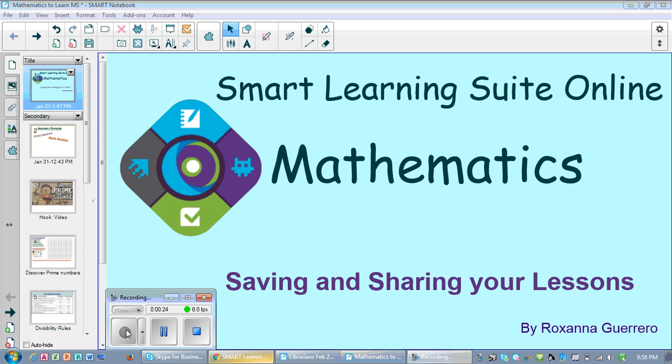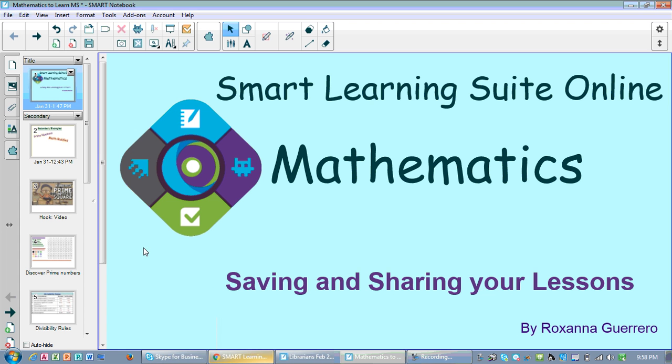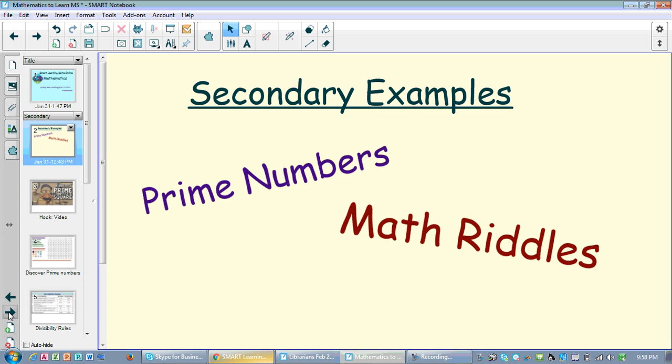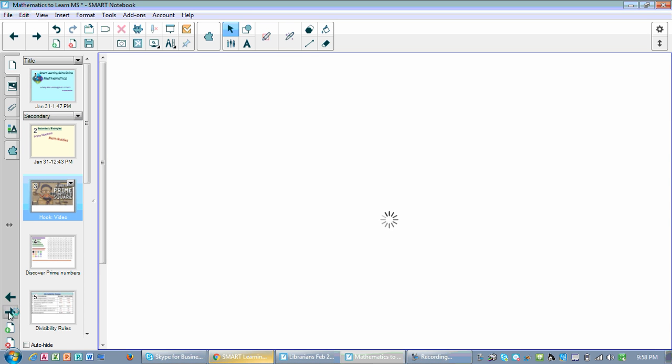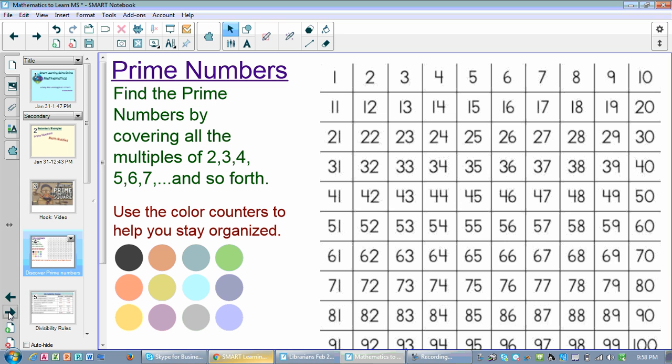What you currently see in front of you is a smart notebook file with 11 pages. You see here we have a title page. I can continue. We're going to be focusing on prime numbers and math riddles. I have a hook which is a video. We're not going to move on past that one.